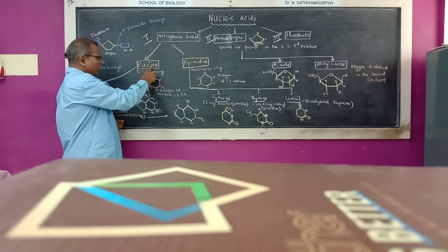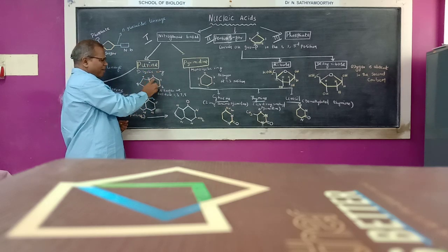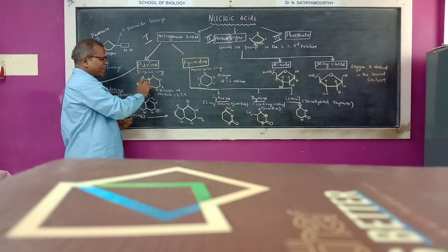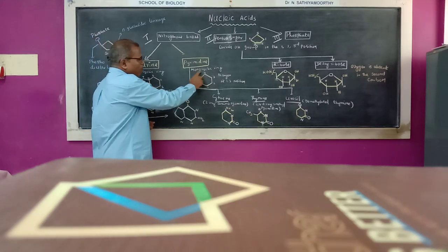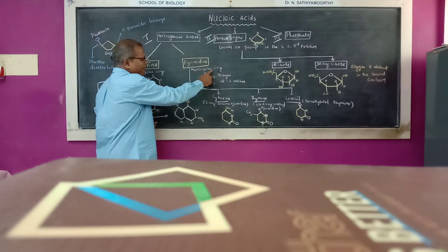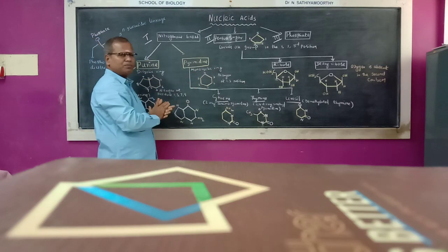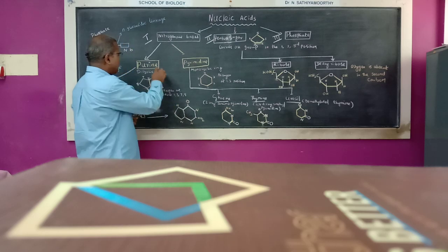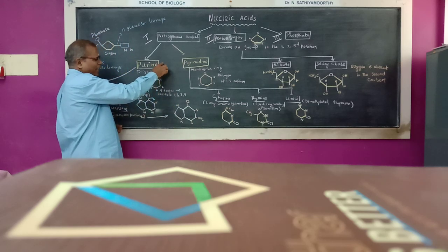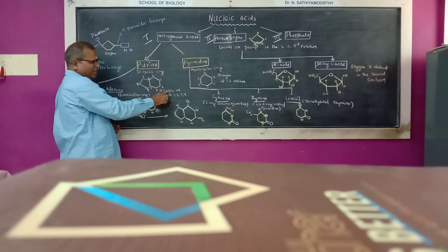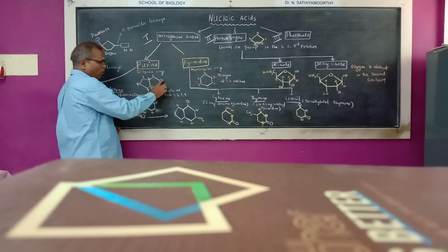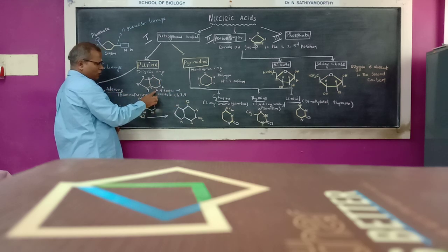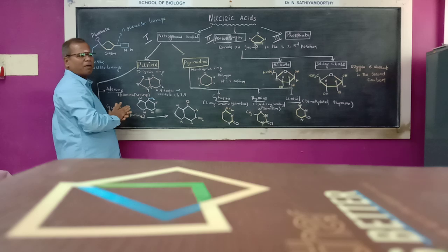Purine bases have a bicyclic ring structure. This is a bicyclic ring. In the purine ring, nitrogen is located at positions 1, 3, 7, and 9.